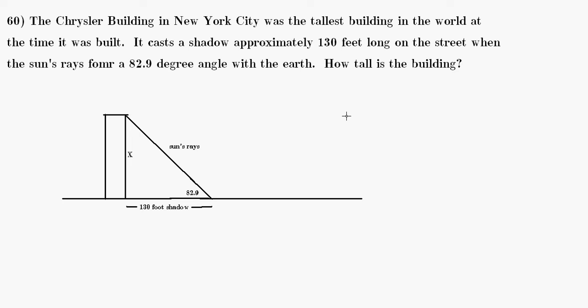How tall is the building? Looking at the drawing you can see that we're at 82.9 degrees, and looking at the height of the building and the length of the shadow, we're looking at a tangent relationship which is opposite over adjacent.